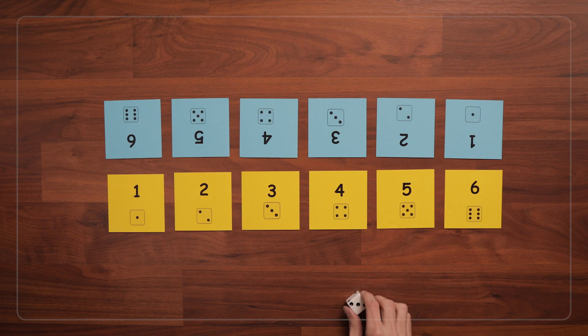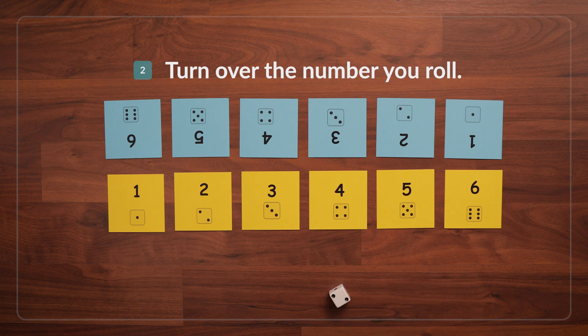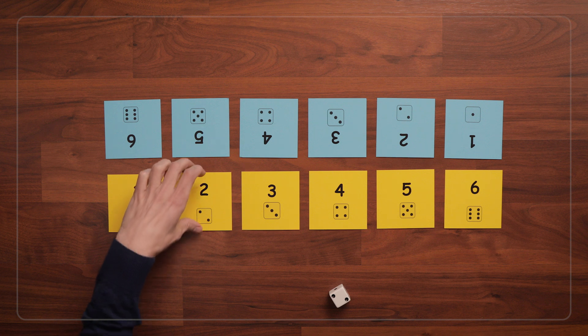Once the cards are all set up, roll the die and turn over the card that matches the number you rolled. So I rolled a 2, and I turn over my 2 card.